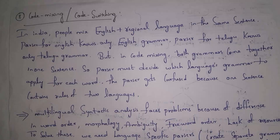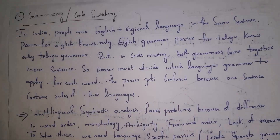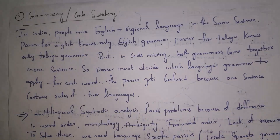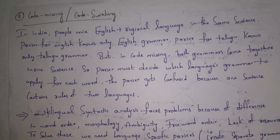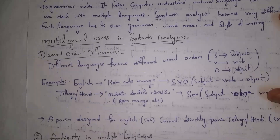Another issue is code mixing or code switching. In India, most people use English along with regional languages. For example, a WhatsApp message like 'Hi bhagunava' mixes English ('hi') with Telugu ('bhagunava'). If a parser is trained only in English it understands only English grammar, and if trained only in Telugu it understands only Telugu grammar. Whenever two languages are mixed in a single sentence, the parser needs to decide which language grammar to apply for each word, and this causes confusion.